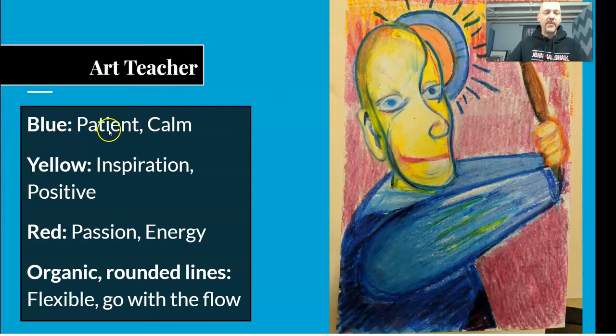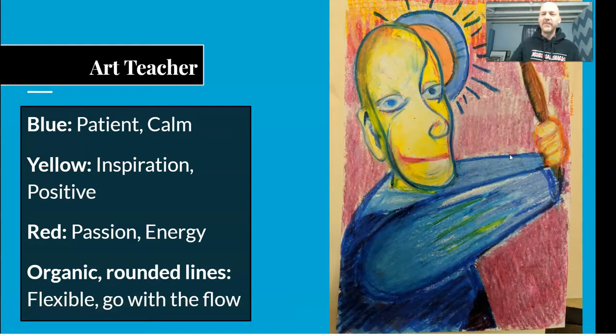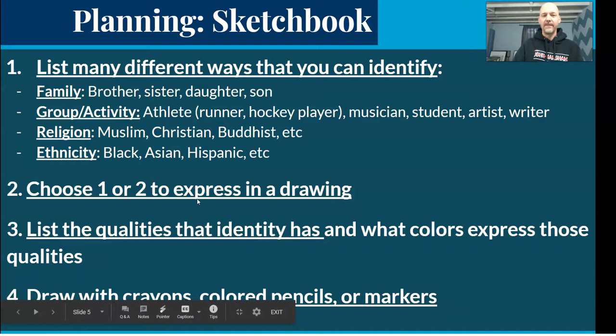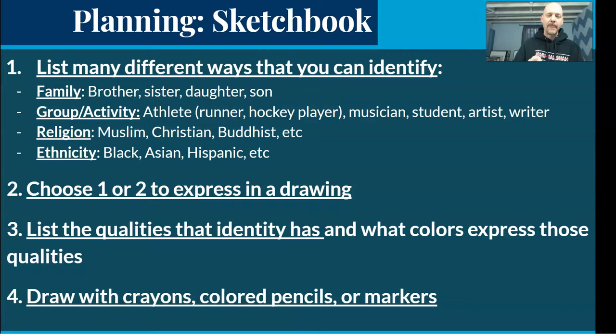Then you're going to choose colors to express those qualities. For instance, I'm an art teacher — I need to be patient and calm, so blue helps express that. I need to have inspiration and be positive, so yellow. Passion and energy — I'm going to use organic, rounded, flowing shapes because you need to be flexible. That's how I'm expressing myself. You list your identities, choose one, and list those qualities.